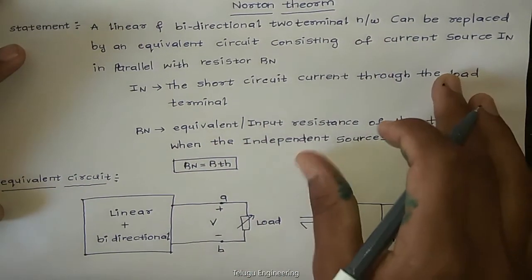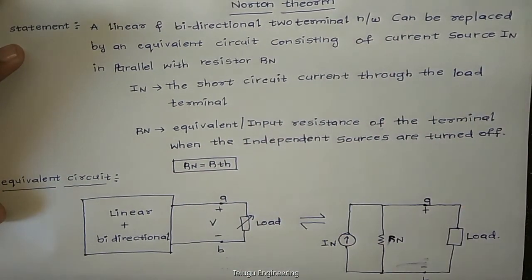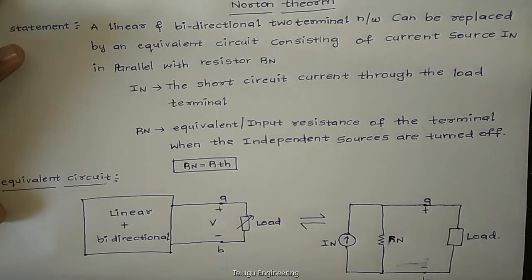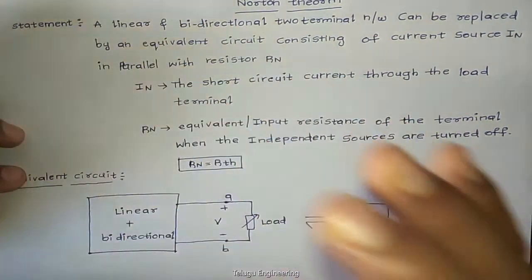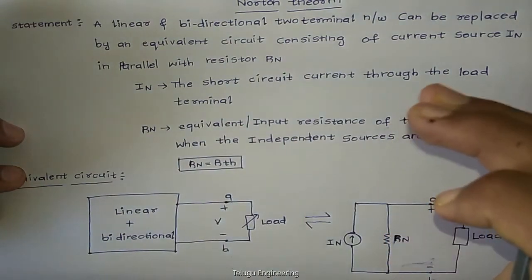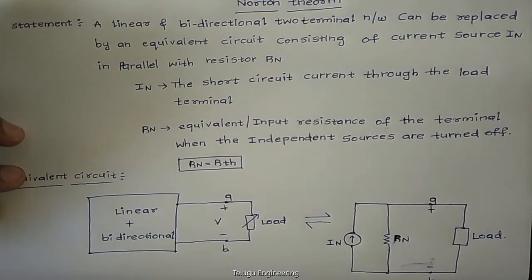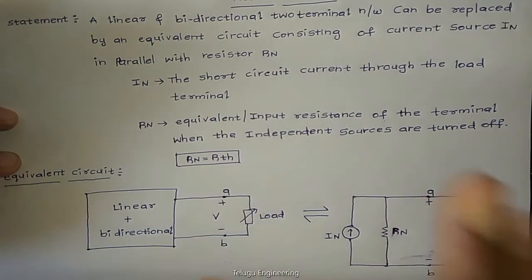This theorem is simple. Thevenin's theorem is a voltage-to-current-source transformation. For Norton's theorem, we will be looking at the statement, the equivalent circuit, and a good example.